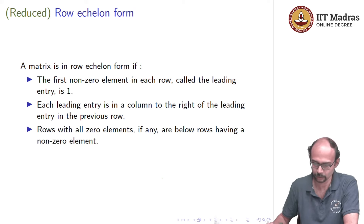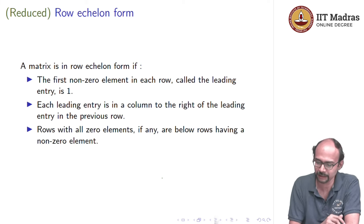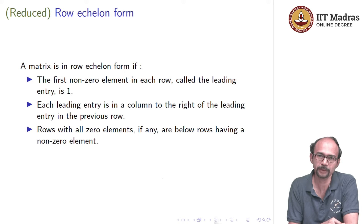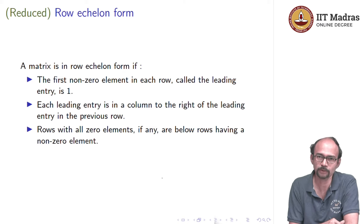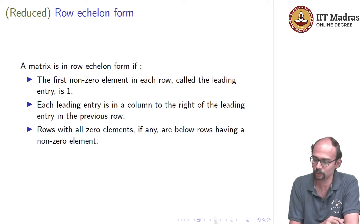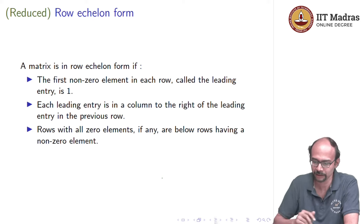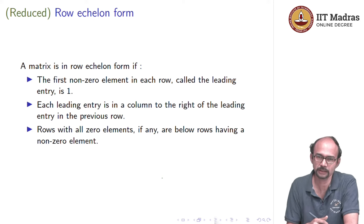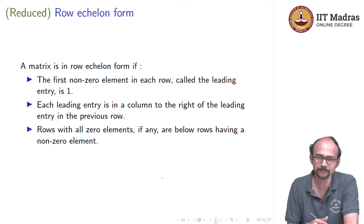The third requirement is that rows with all zero elements must lie at the bottom of the matrix — they must come below all rows which have a nonzero element. These three requirements define a matrix in row echelon form.